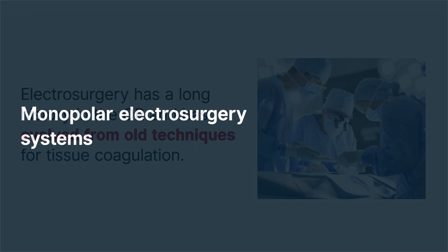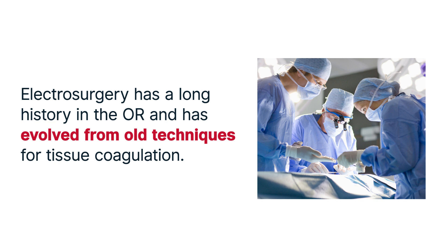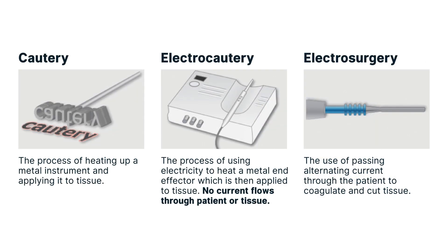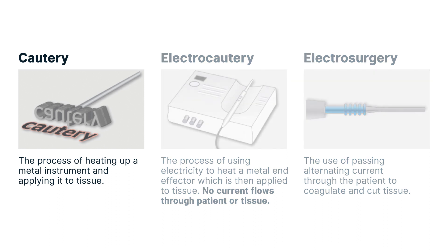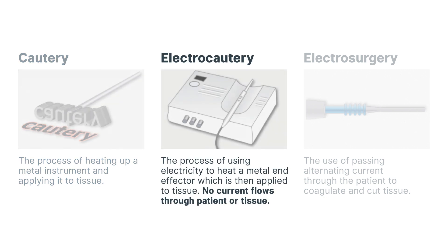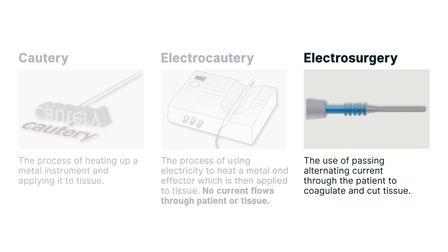Monopolar Electrosurgery Systems. Electrosurgery has a long history in the OR and has evolved from old techniques for tissue coagulation. Each technique is distinct and uses a different approach to generate heat to achieve hemostasis. Cautery is the process of heating up a metal instrument and applying it to the tissue. Electrocautery uses electricity to heat a metal end effector, which is then applied to tissue. Monopolar energy is classified as electrosurgery — it passes alternating current through the patient to coagulate and cut tissue. The technology is often commonly referred to as BOVI, which is the last name of the inventor of the technology.